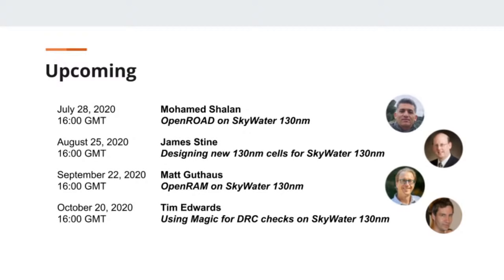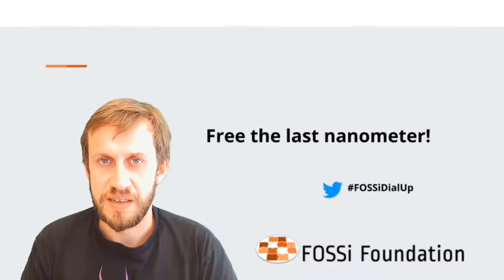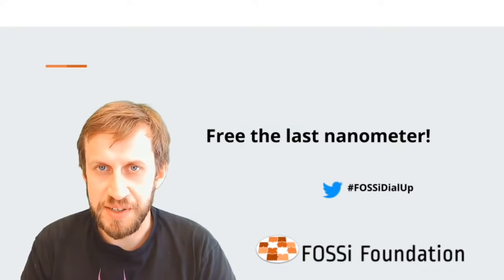The next episodes of the series will cover all aspects and tools required to create a full open source chip design flow. In July, Mohamed Shalan will present OpenRAM support. In August, James Dine will present his work on standard cells, followed by Matt Goodhouse on OpenRAM support. Tim Edwards will close this batch of presentations and present DRC checks with Magic. There are many more topics to follow. Please ask your questions in the comment section on YouTube, noting that it is moderated. We kindly ask you to stay on topic. After Tim's presentation, we will ask him curated questions. Now let's switch over to Tim.